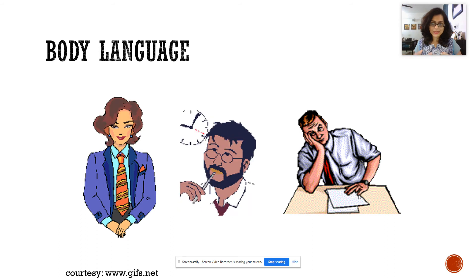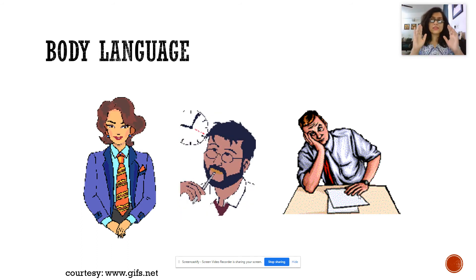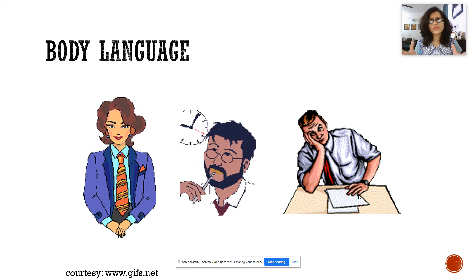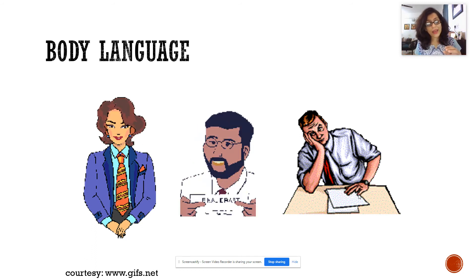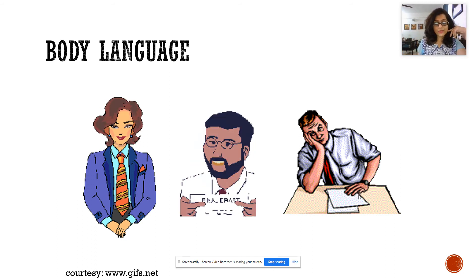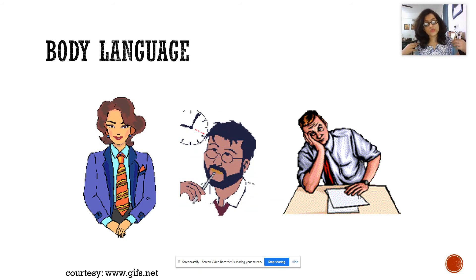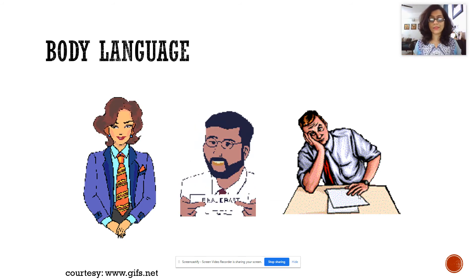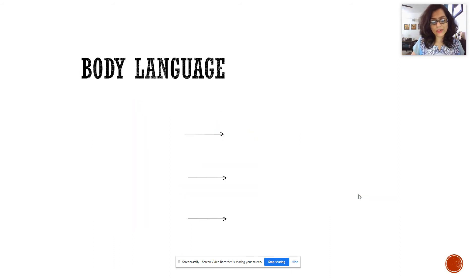Body language is not only about hands, not only about the face, and not only about your shoulders — it's about all of them put together. It's what you do with your hands, plus the position of your face, plus whether your shoulders are drooping, sagging, or alert, and whether you're shaking or nodding your head. All of that comes in body language.